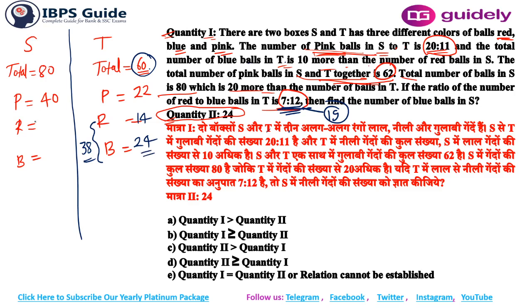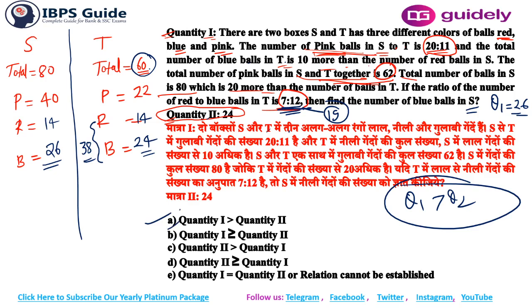Blue balls in T is 24, which is 10 more than red balls in S, so red in S is 14. Total balls in S is 80, pink in S is 40, red in S is 14, so blue in S equals 80 minus 40 minus 14, which is 26. So Q1 equals 26 and Q2 equals 24. Therefore Q1 is greater than Q2, and the answer is option A.